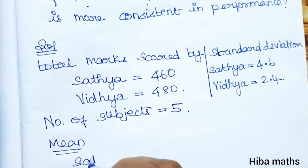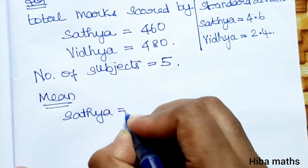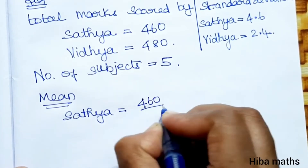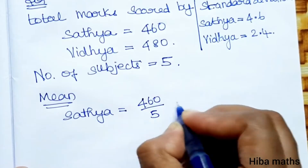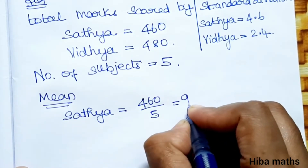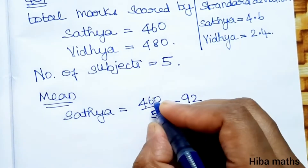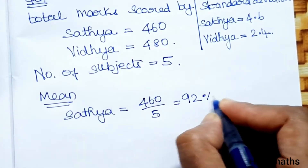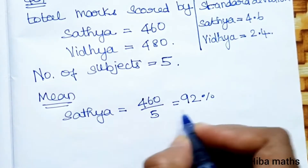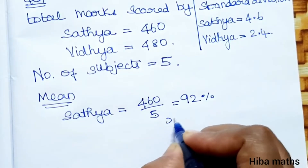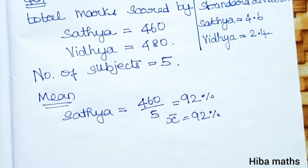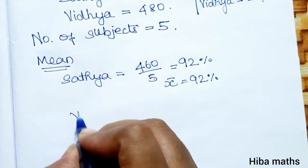First, for Satya: mean equals total marks divided by number of subjects. Satya's mean = 460 divided by 5. 5 nines are 45, balance 1; 5 twos are 10, so 92. The mean value x̄ for Satya is equal to 92.